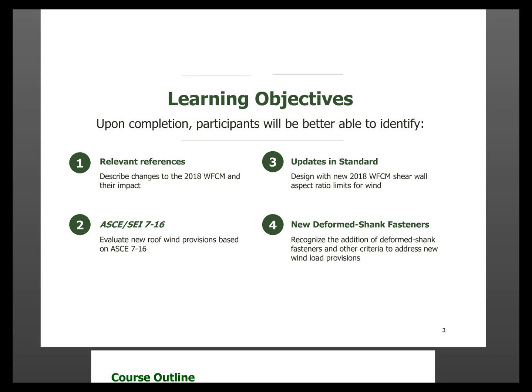This won't cover all of the changes — if you go to our website awc.org, there are other programs that detail the changes more thoroughly. We'll talk about some of the new roof wind provisions in ASCE 7-16 that led to some of the changes in the Wood Frame Construction Manual, as well as some of those updates in the WFCM on the shear wall aspect ratio limits.